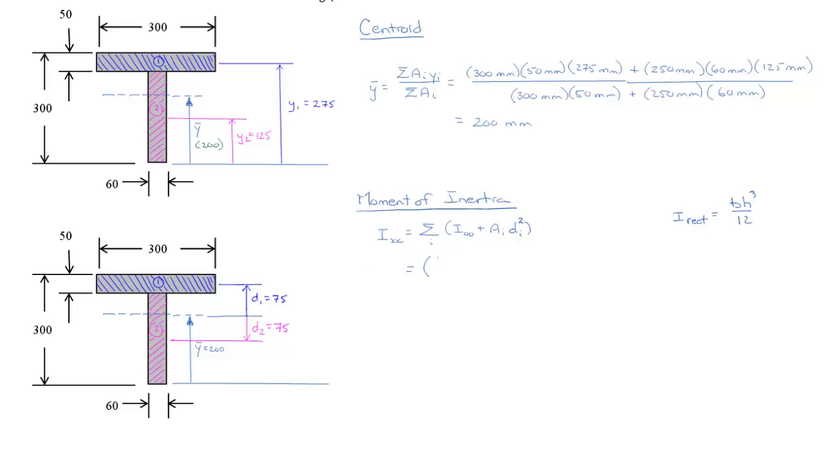So we can bring that in here. For area 1, we see that it has a width of 300 mm and a height of 50 mm, which would be cubed, all divided by 12. So that gives us I₀₀ for area 1. Its area is 300 mm multiplied by 50 mm, and its distance d1 we calculated down here to be 75 mm, and that needs to be squared.